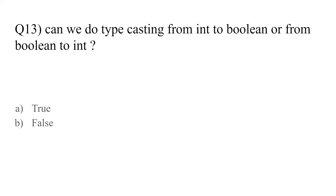Question number thirteen: can we do type casting from int to boolean or from boolean to int? Java allows type casting — for example, parseInt and parseFloat can convert a variable from one data type to another. However, you have to be sure both data types are compatible for casting. The answer is false — we cannot express 5 as boolean or true as an int. Both types must be compatible with each other for type casting.